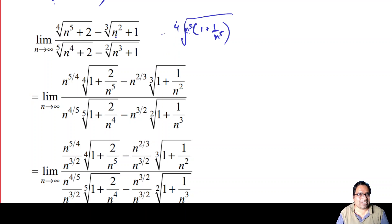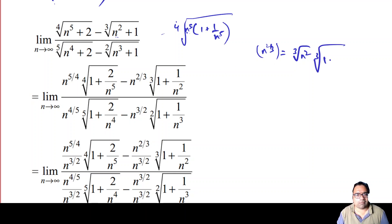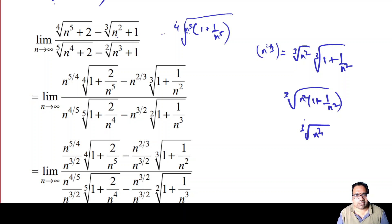Similarly, n^2 + 1 can be written as n^2 times (1 + 1/n^2). If you bring n^2 outside of a cube root, it becomes n^(2/3). So we write it as n^(2/3) times the cube root of (1 + 1/n^2), which is the cube root of (n^2 + 1). n^(2/3) is simply the cube root of n^2.